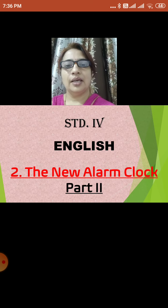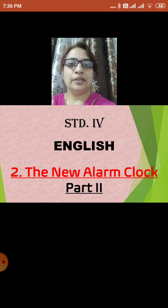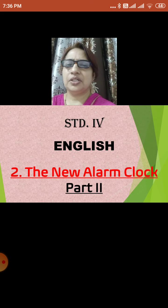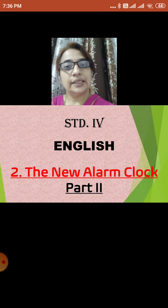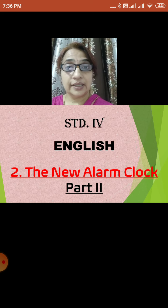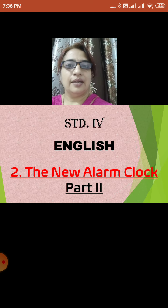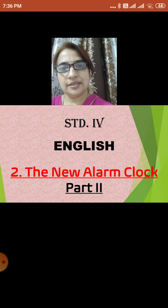Let us take a quick recap of what we learnt in Part 1. Tina is a small girl who usually comes late to school. Her late coming to school — Deepa doesn't like it at all, being her best friend. So Ajay and Deepa decided to gift her a puzzle alarm clock. And what happens next? That we are going to see in today's period.